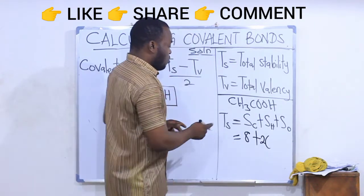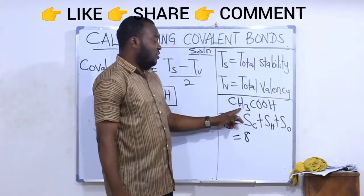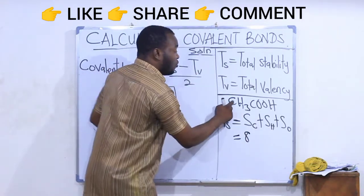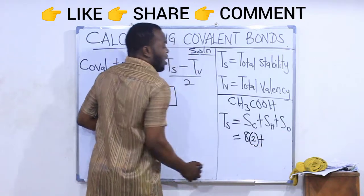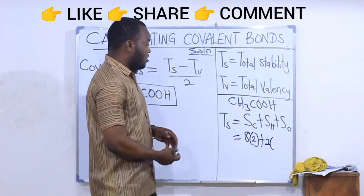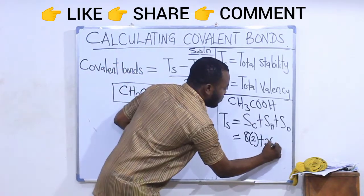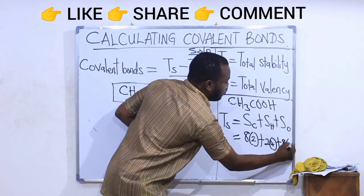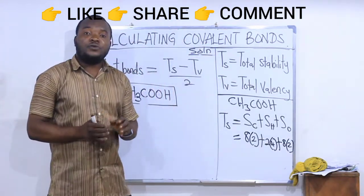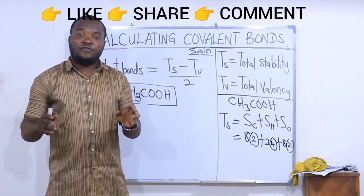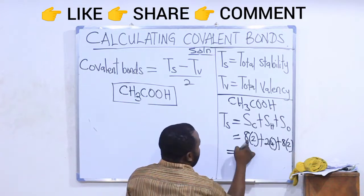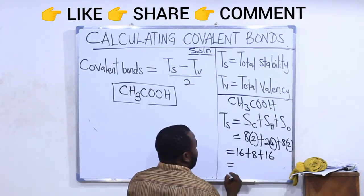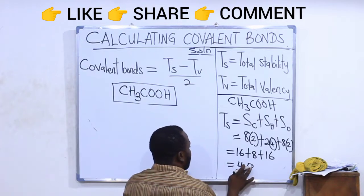So carbon has stability of 8 plus hydrogen has stability of 2. But then how many hydrogens are there? Take a look. This is ethanoic acid. Total number of carbons are 1, 2. 8 is for only 1 carbon. Now there are 2 carbons in the compound, so I multiply by 2. Plus, hydrogen has stability of 2. I multiply by how many hydrogens that are there? 3 plus 1, 4 of them. Plus, oxygen has stability of 8. How many oxygens are here? 2. So I'm saying 8 multiplied by 2. My total stability becomes 8 times 2 is 16, plus 2 times 4 is 8, plus 8 times 2 is 16. 16 plus 16 is 32, plus 8 is 40. So my total stability is 40.